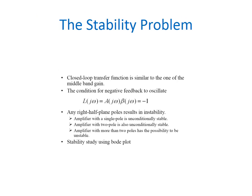Next the stability problem. Here the closed loop transfer function which is similar to the one of the middle band gain. The condition for the negative feedback to oscillate is L of j omega equal to A of j omega into beta of j omega equal to minus 1. Any right half plane poles result in instability. Amplifier with a single pole is unconditionally stable. Amplifier with two poles is also unconditionally stable. Amplifier with more than two poles has the possibility to be unstable.